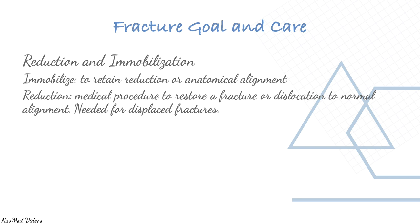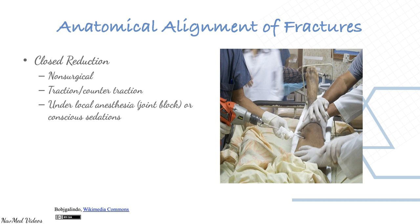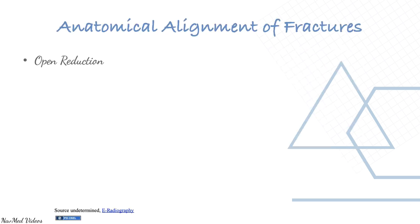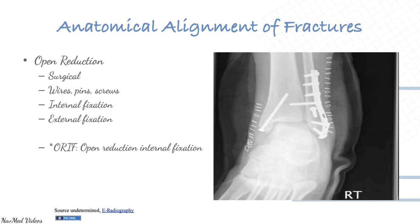Fracture care goals are to reduce and immobilize. Reduction is the medical procedure to restore a fracture or dislocation to normal alignment. Closed reduction involves anatomical alignment by the surgical team using traction under local anesthesia. Open reduction — ORIF (open reduction and internal fixation) — uses wires, pins, plates, and screws, as seen in this X-ray of an ankle fracture fixed with plates and screws.